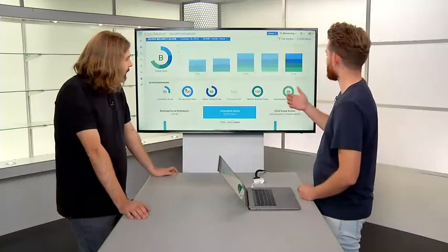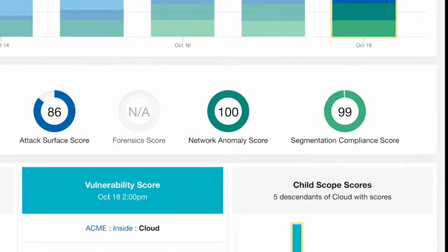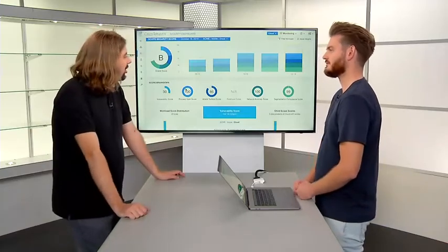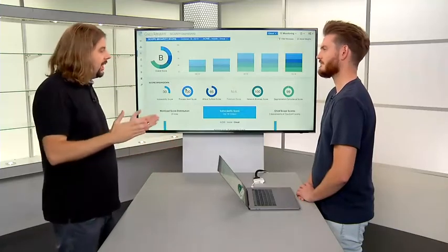We also have network anomaly and segmentation compliance scores. Network anomaly is about baselining. If we see a server that is normally sending one gig and receiving 100 meg in a typical 9-to-5 pattern — with a spike in the morning and traffic going down around 7 PM — that sounds normal for most enterprises. But if those figures get flipped, so it's now sending out one gig and receiving only 100 meg instead, that could be data exfiltration.